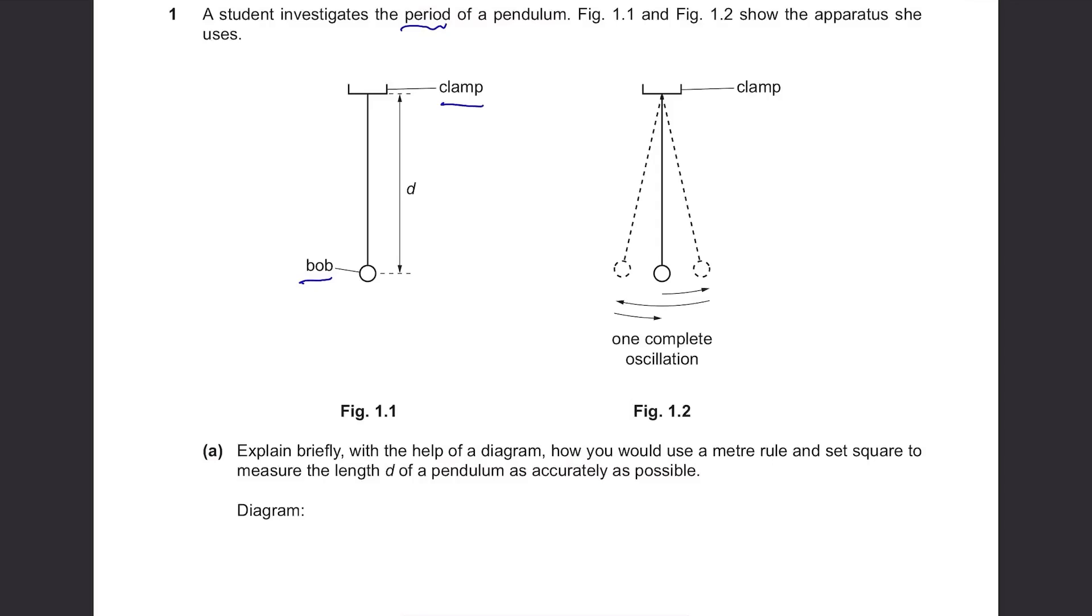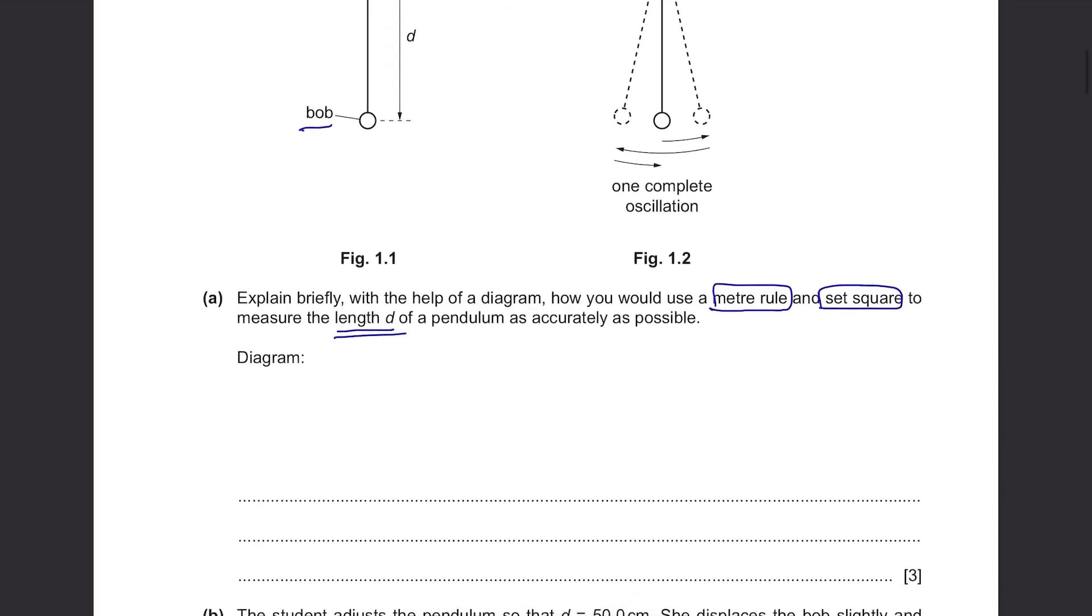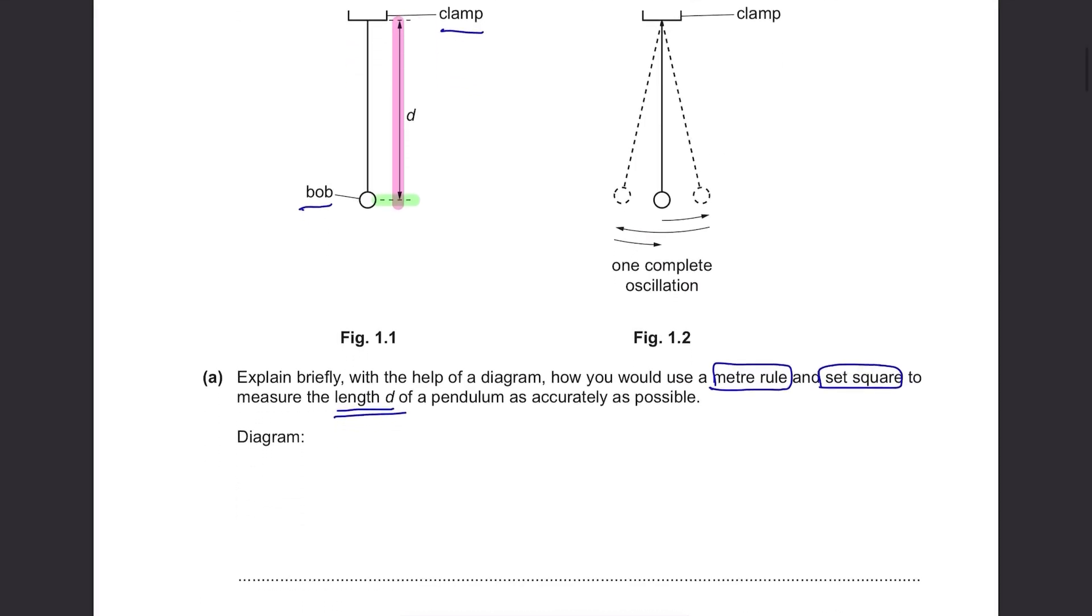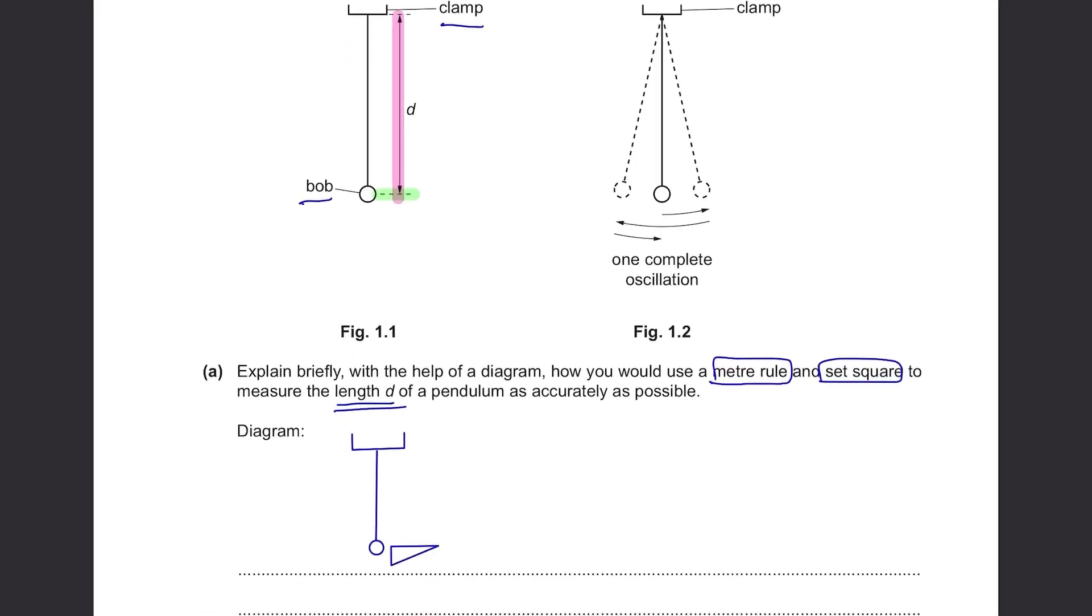Explain briefly with the help of a diagram how you'd use a meter rule and set square to measure the length d of a pendulum as accurately as possible. We need to measure this length that is exactly perpendicular to this horizontal line at the center of the bob. So place your set square like this and the meter rule to be perpendicular to this horizontal line made by the set square.